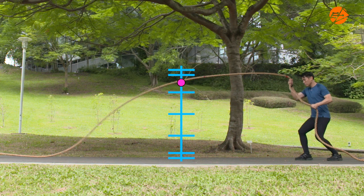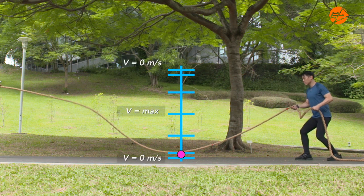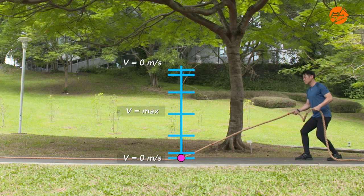From the graph, we can identify where the particle is at its maximum velocity and momentarily at rest.